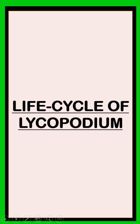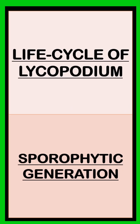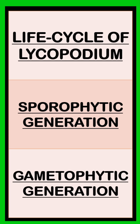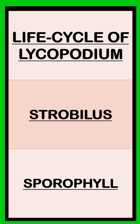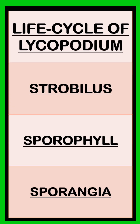Lycopodium shows alternation of generation in its life cycle, with diploid sporophytic and haploid gametophytic generations. The sporophytic plant body has a strobilus, which is an aggregate of sporophylls that bears sporangia.